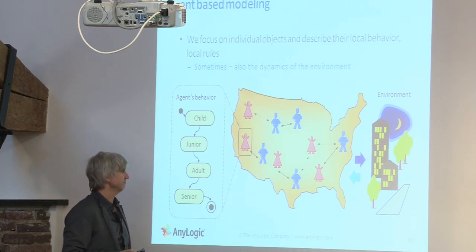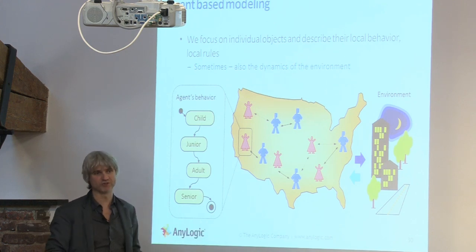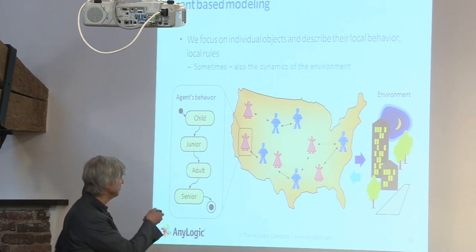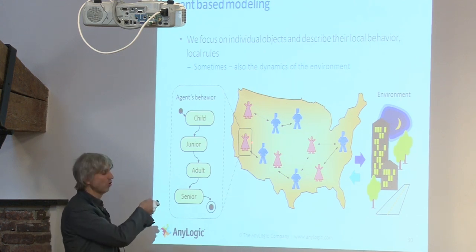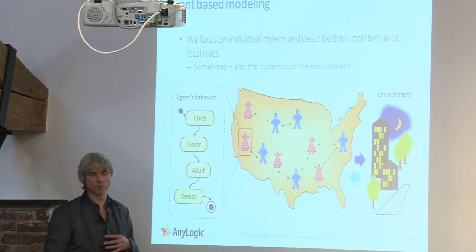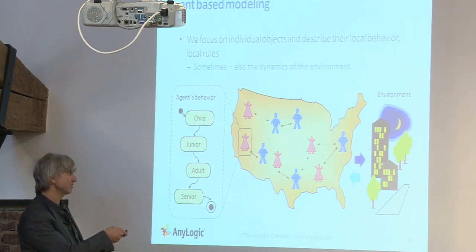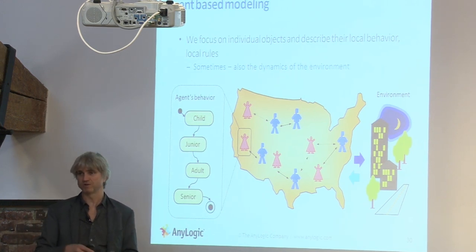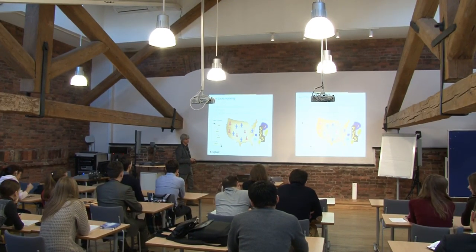The methodology of agent-based modeling suggests that you may not know how the system as a whole thing behaves, you may not know what the global variables and their dependencies are, but you may guess how individual objects in your system work. You may start specifying the behavior of individual objects — be that people, pieces of equipment, competing companies, whatever — put them together in a certain environment, let them communicate, and see what kind of global or system-level behavior will emerge out of that communication.